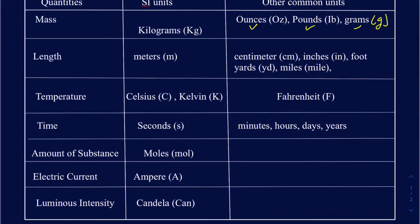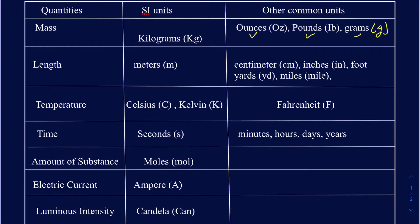The next fundamental unit is length. The SI unit for length is meters. In North America and other parts of the globe, you also use centimeters, inches, feet, yards, and miles. You may also see kilometers — that's just meters with the 'kilo' prefix in front of it. Let's look at some common conversion factors among the units of length.